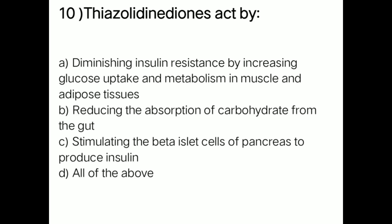Next question: thiazolidinediones act by — option A: diminishing insulin resistance by increasing glucose uptake and metabolism in muscle and adipose tissues; option B: reducing absorption of carbohydrates from the gut; option C: stimulating beta islet cells to produce insulin; option D: all of the above. Right answer is option A — diminishing insulin resistance by increasing glucose uptake and metabolism in muscles and adipose tissues.